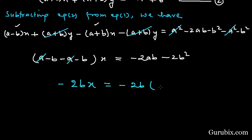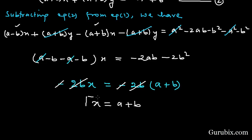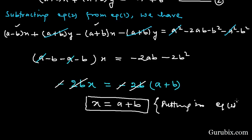We can cancel out minus 2b from both sides. This means x equals a plus b. This is the value of x. Now we shall substitute this value into equation number two to get the value of y.